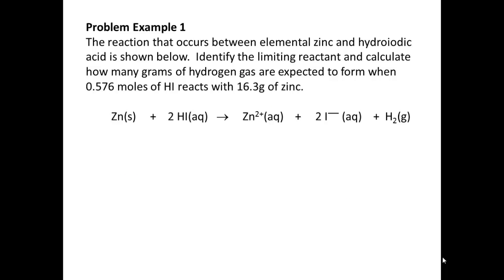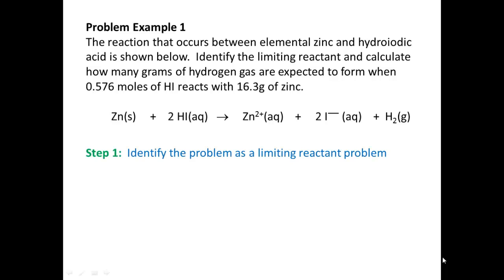Let's try problem example one. The reaction that occurs between elemental zinc and hydroiodic acid is shown below. Identify the limiting reactant and calculate how many grams of hydrogen gas are expected to form when 0.576 moles of hydroiodic acid reacts with 16.3 grams of zinc. We know this is a limiting reactant problem because we are given amounts of two different reactants: hydroiodic acid and zinc. For step two, we choose a product — I'm going to suggest using hydrogen gas, so I'm going to circle that.